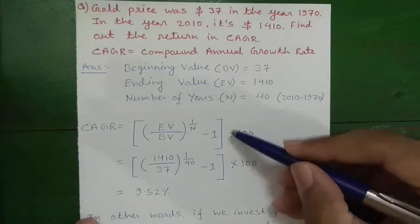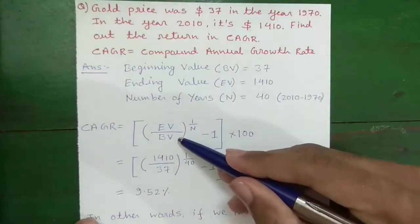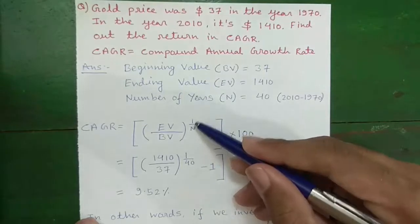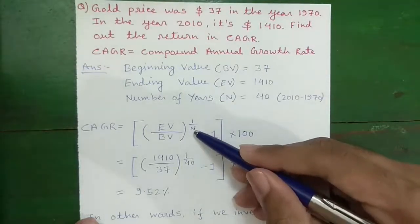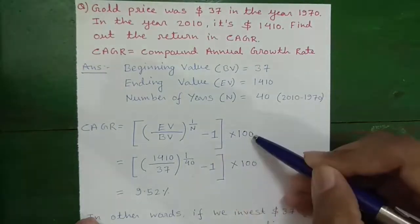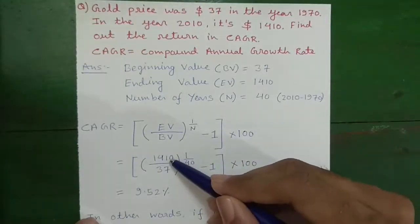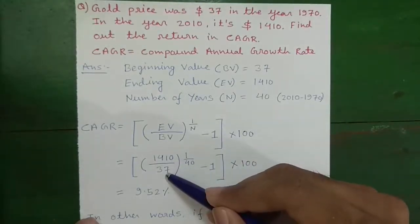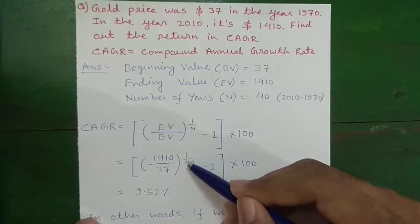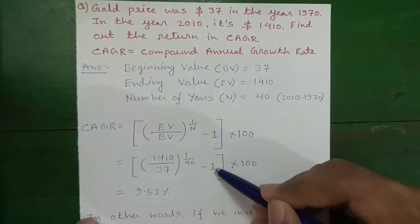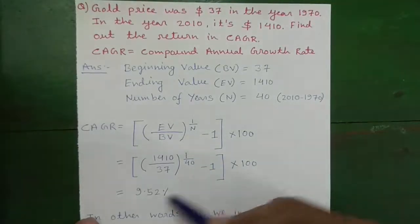So the CAGR formula is ending value divided by beginning value to the power 1 divided by number of years minus 1 into 100. That is 1410 divided by 37 to the power 1 divided by 40 minus 1 into 100. So the CAGR is 9.52 percent.